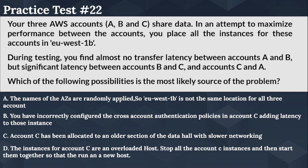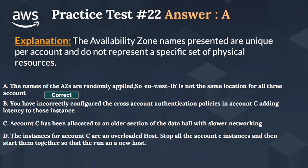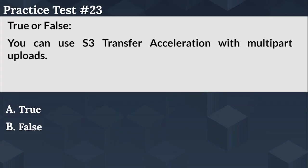The right answer is Option A — the names of the AZs are randomly applied, so EU-West-1B is not the same location for all three accounts. The availability zone names presented are unique per account and do not represent a specific set of physical resources. Let's move on to the next question.